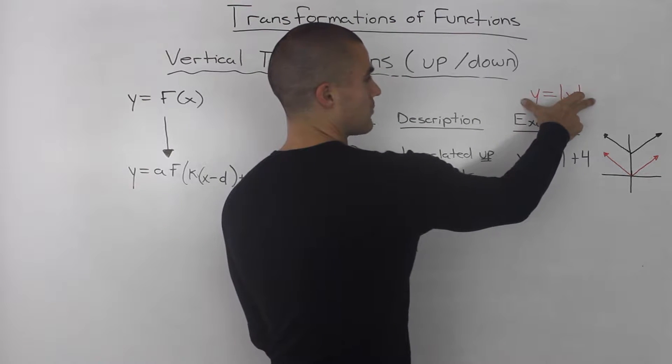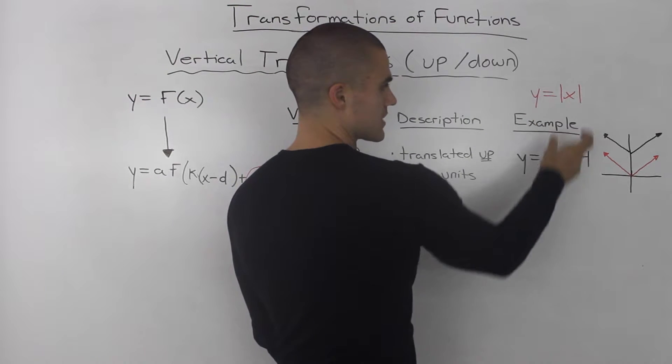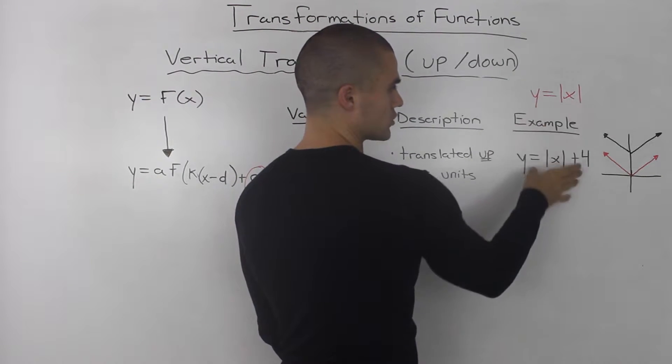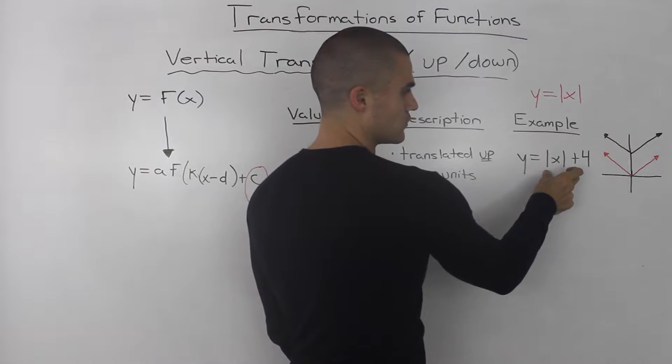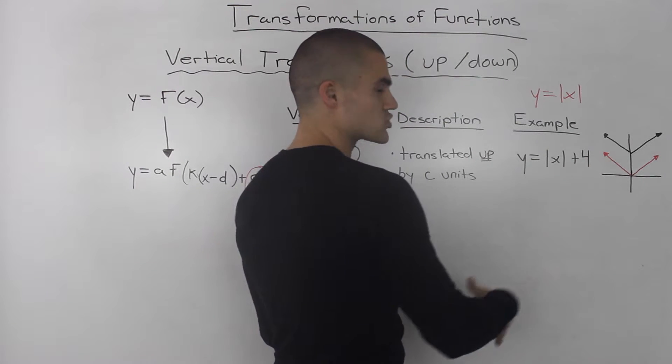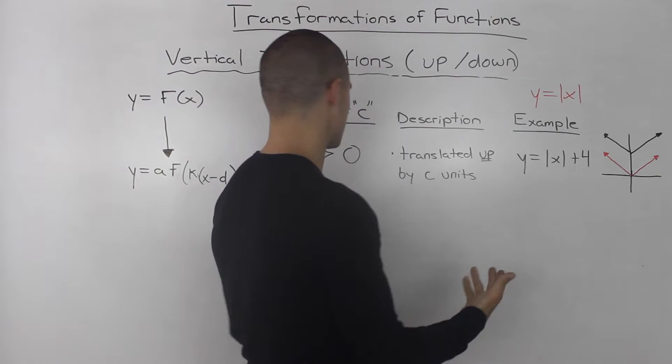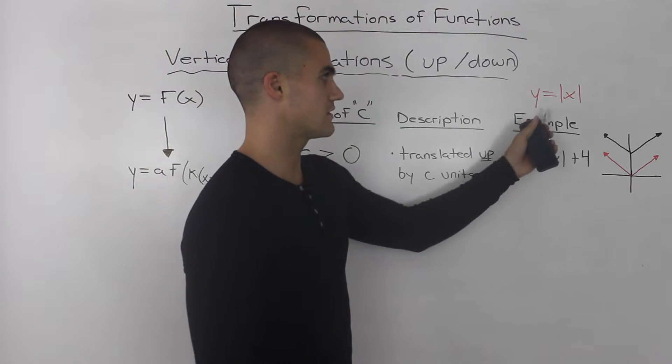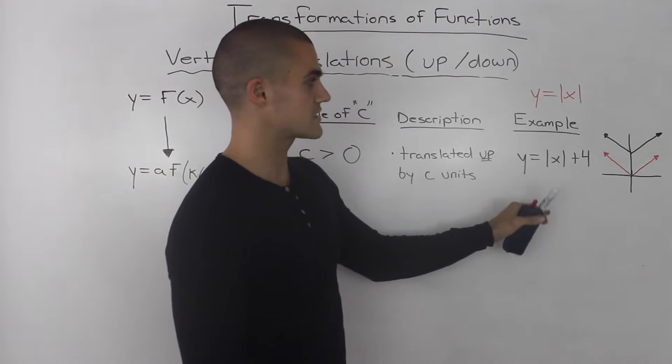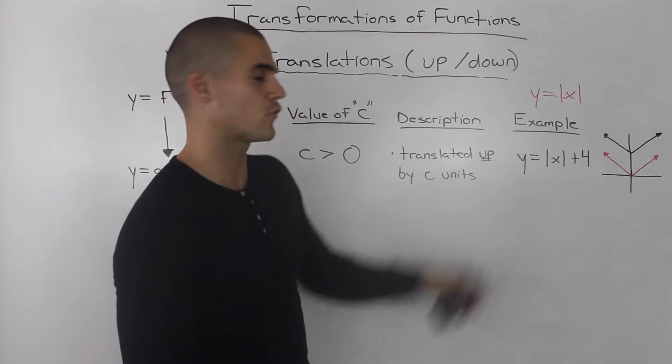We have our parent function, the absolute value of X, and now we're going to transform it to the absolute value of X plus 4. Our C value is positive 4, meaning the parent function gets translated up by 4 units.